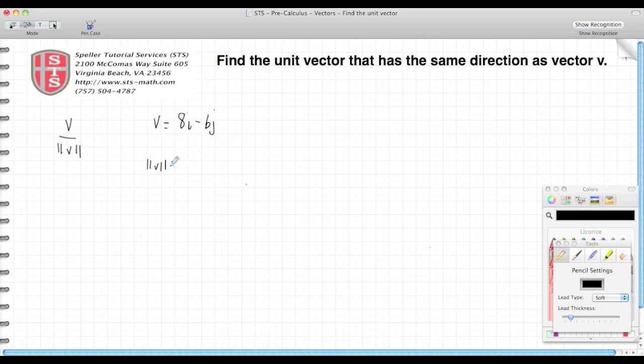We take the square root of its two components. The first component we square is 8, plus the second component we square is negative 6. That works out to be...